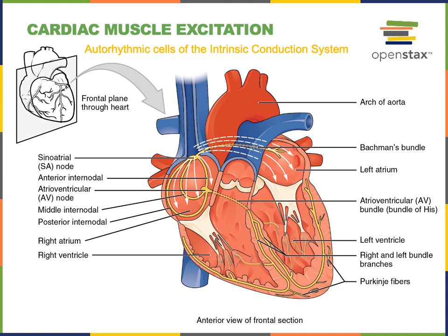The action potential then spreads into the contractile cells, which are the majority of cardiomyocytes found in cardiac muscle — the cells responsible for producing contraction. This intrinsic excitation mechanism of the autorhythmic cells is distinct from skeletal muscle, where the nervous system stimulates excitation and a somatic efferent neuron releases neurotransmitter to stimulate contraction.